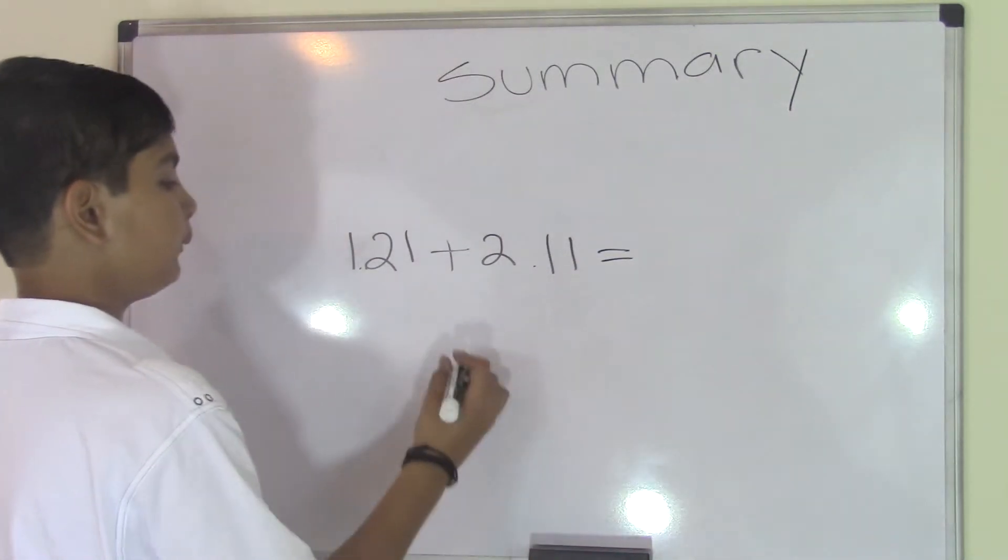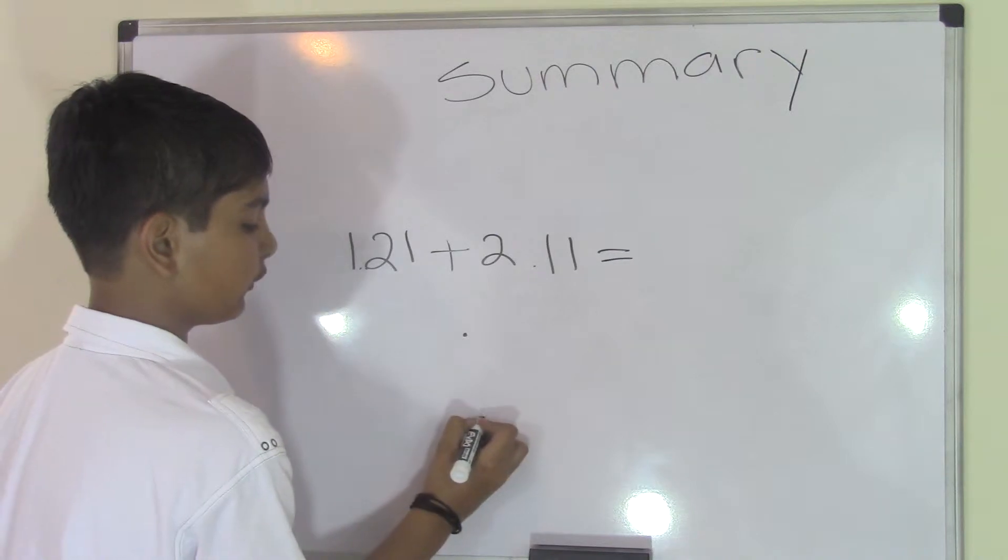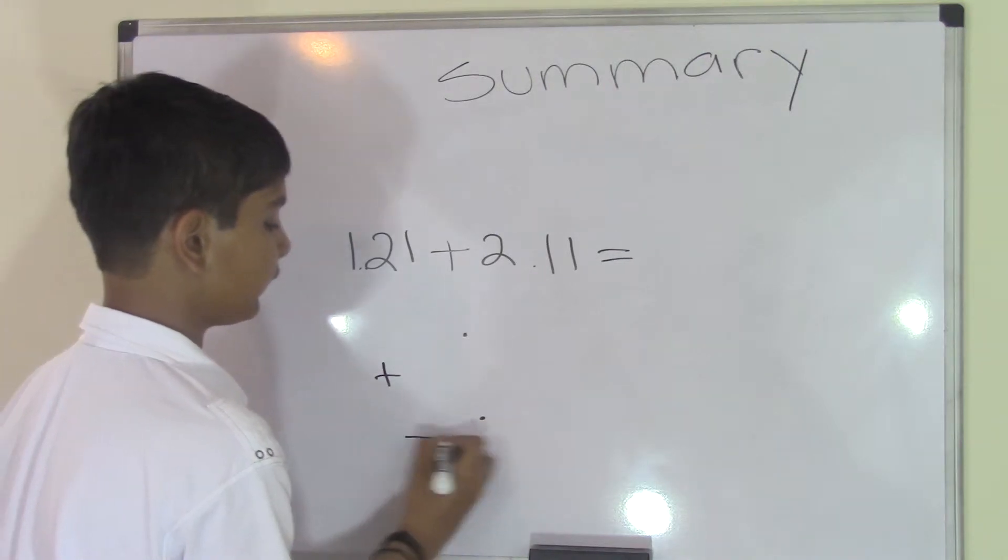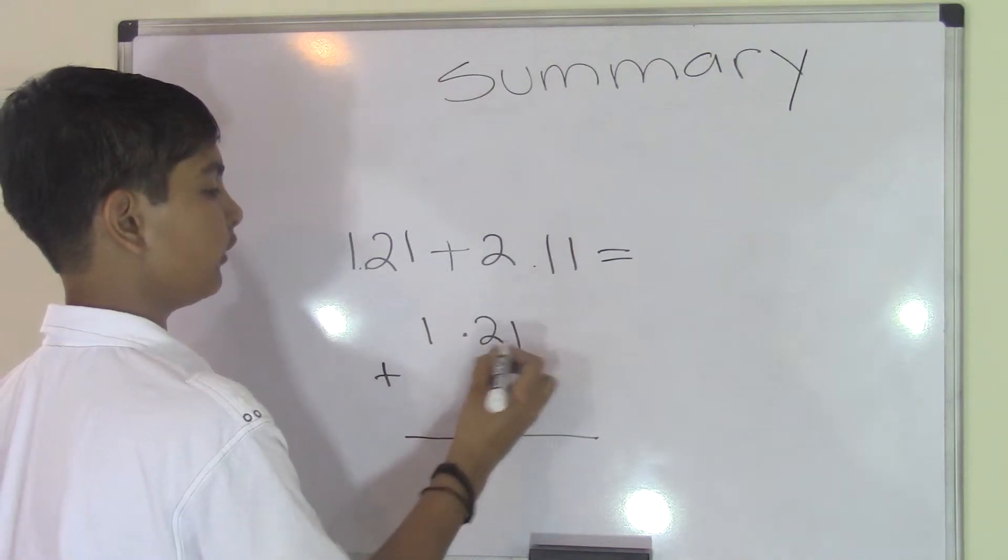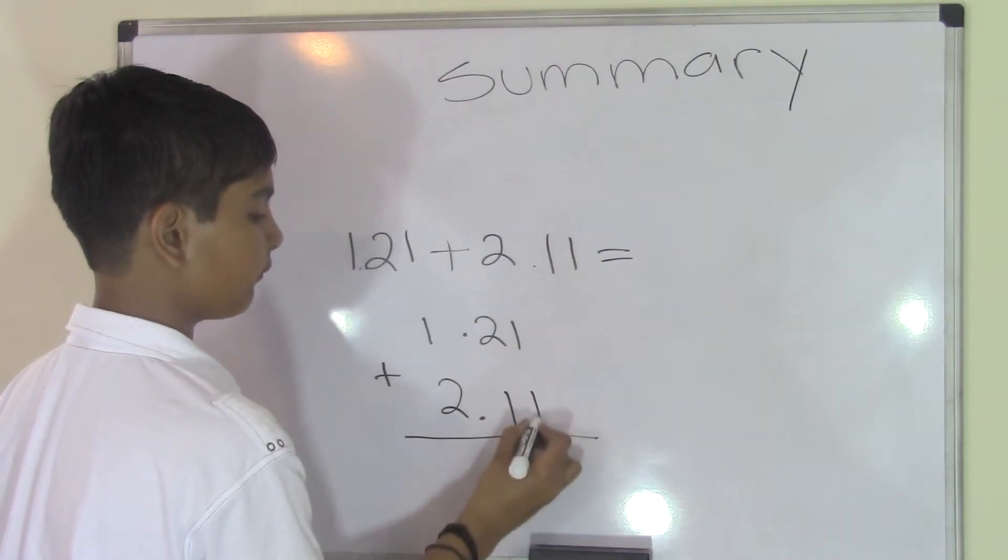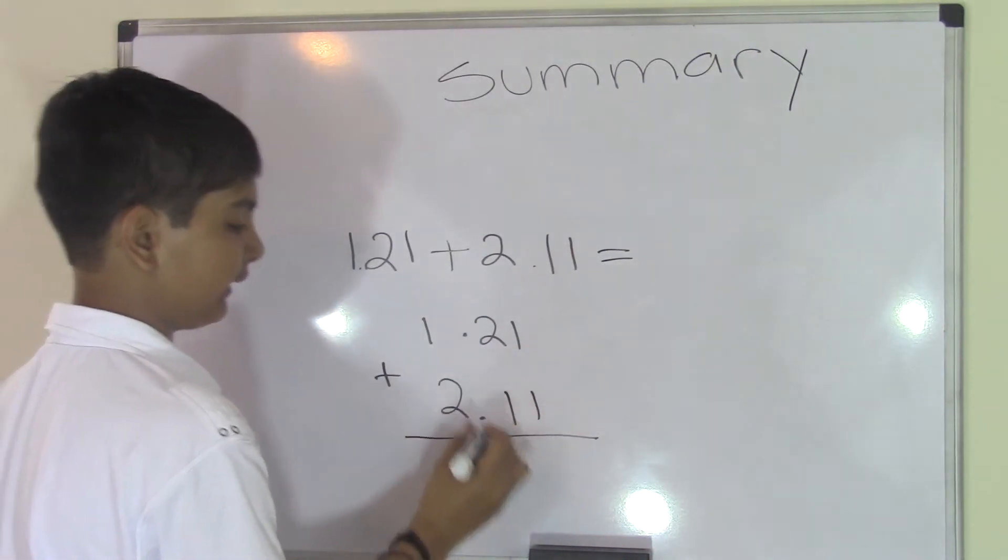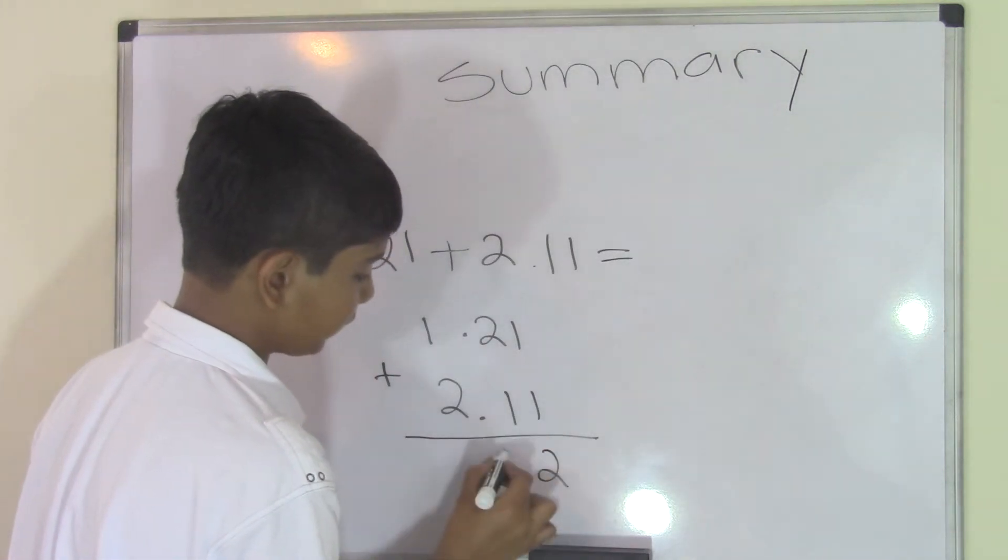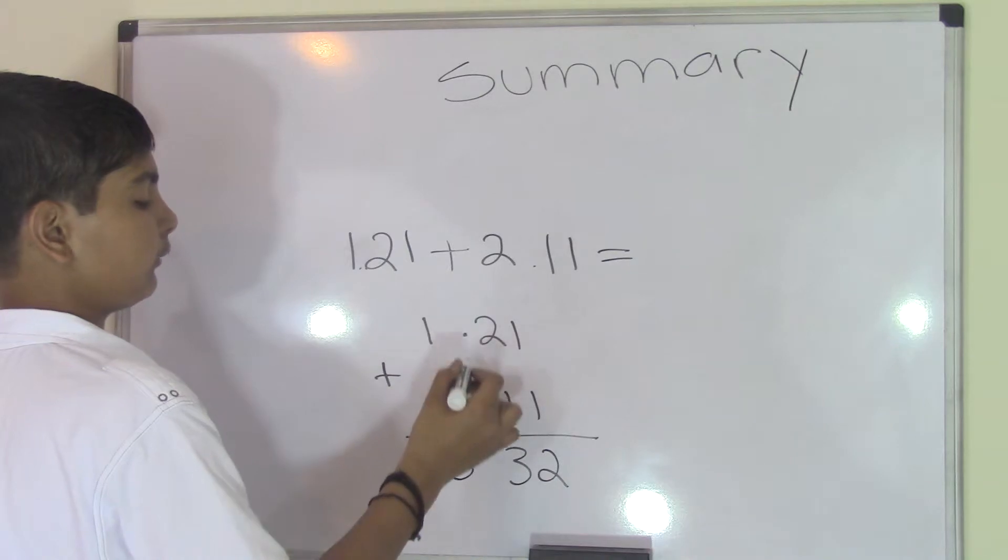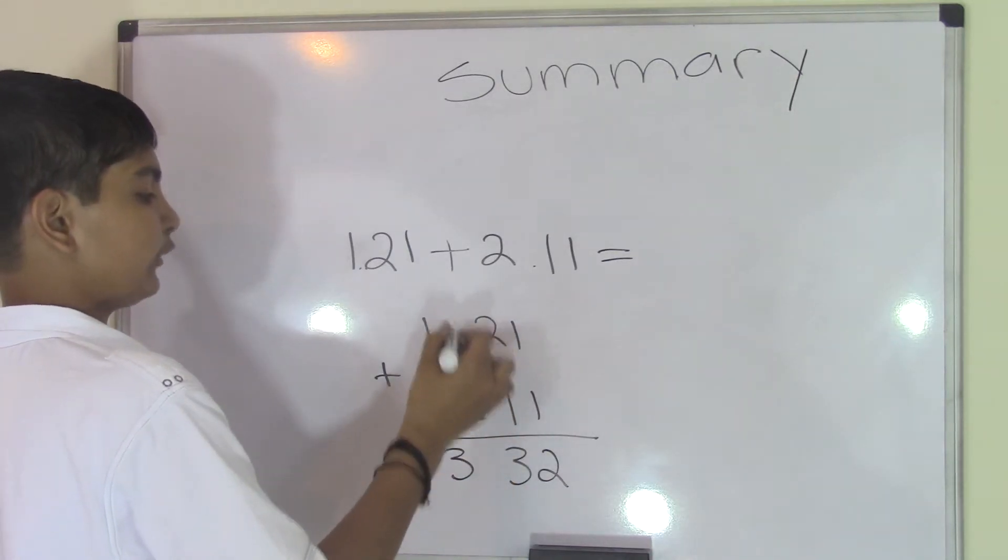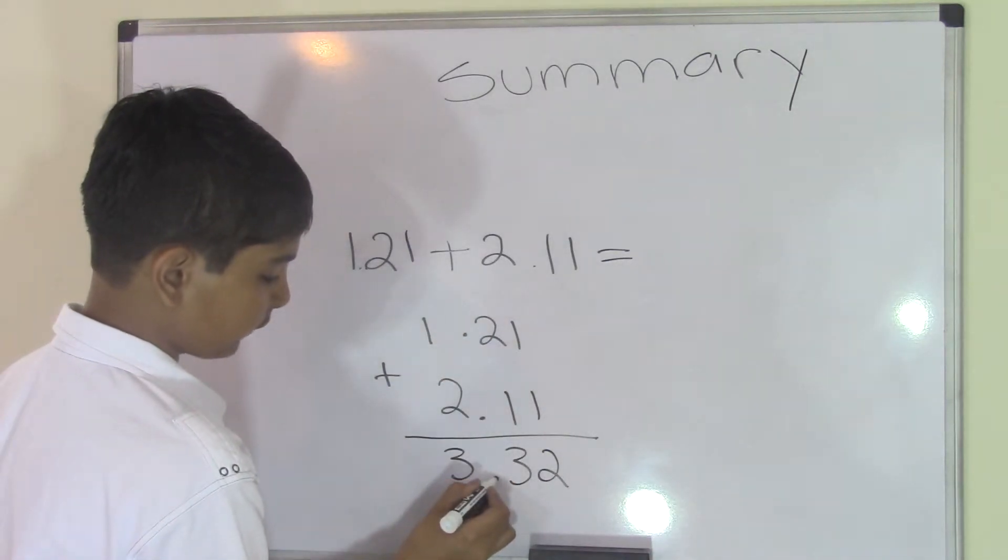Let's go ahead and do that. Add the addition sign, and now put in our numbers and go ahead and add that. So this will be a 2, a 3, and 3. Now to deal with the decimal point, you just bring that straight down, and you get an answer of 3.32.